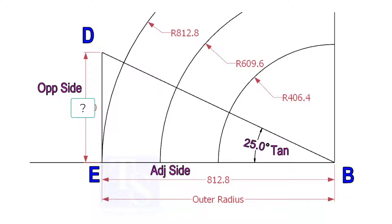To draw the line DB, we need to know the length of the line ED. To calculate ED, we need to apply the formula: tan theta equals opposite side divided by adjacent side.